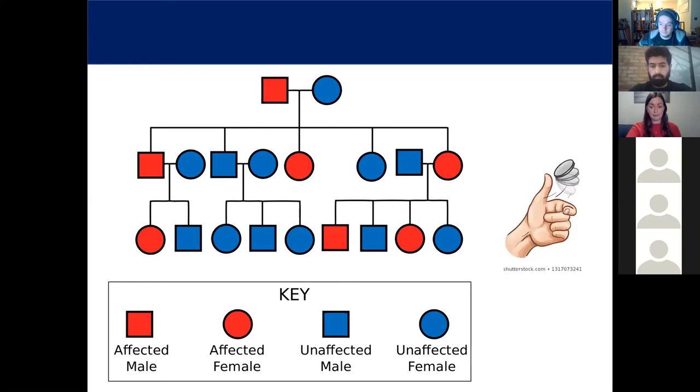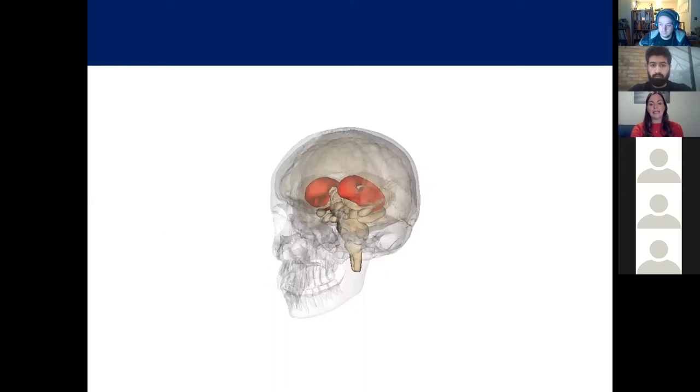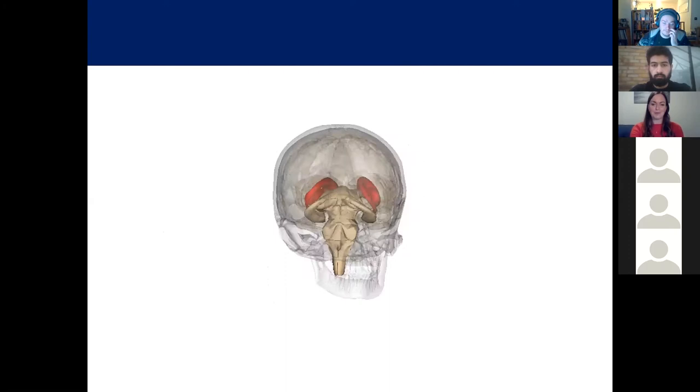Here's a little video to show you what we call the basal ganglia. In the brain, right in the middle there, these are the main area affected in Huntington's disease. One of the reasons it's relatively tricky to treat, there are lots of reasons, is because it affects a part of the brain that's right in the middle, right in the center, so it's quite difficult to get to.